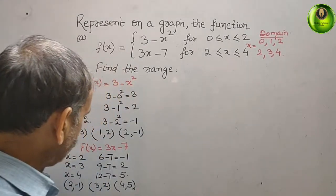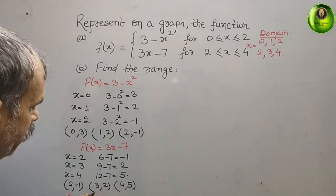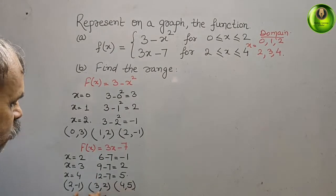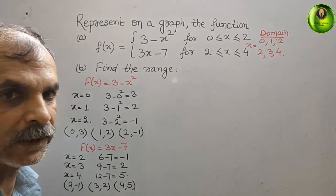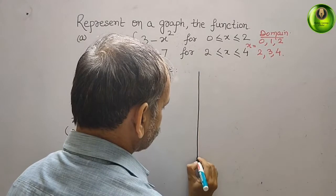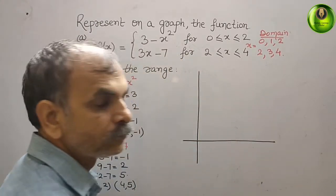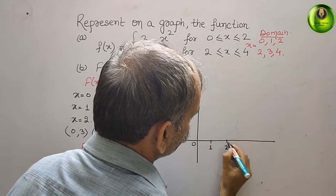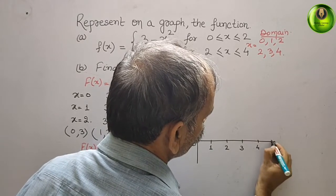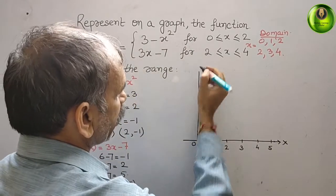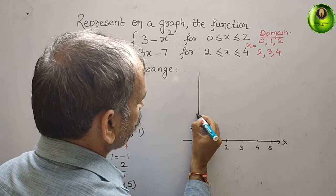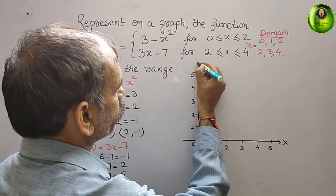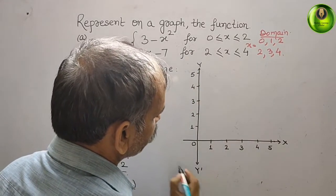On the y-axis, minus 1 is the minimum and 5 is the maximum. On the x-axis, the maximum is 4. So we mark the x-axis: 1, 2, 3, 4, and 5. The y-axis goes: 1, 2, 3, 4, 5. We also have y-dash and x-dash (negative axes), and on the y-dash we mark minus 1.